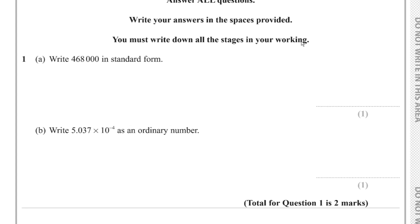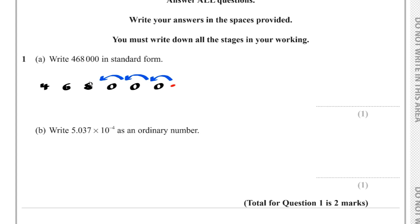Question 1, part A: Write 468,000 in standard form. I've got 468,000 and I need to move the decimal point 1, 2, 3, 4, 5 places to the left, leaving me with 4.68 × 10⁵.